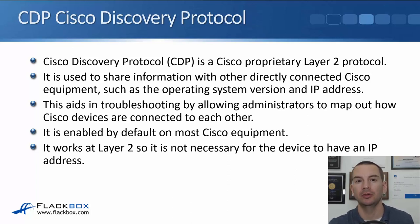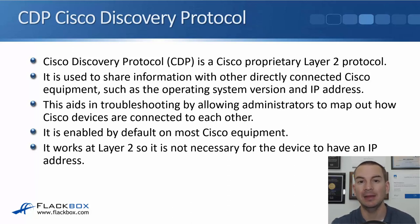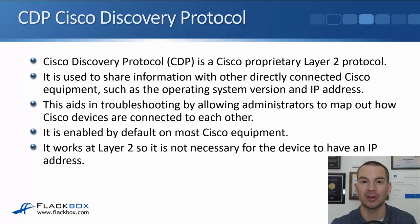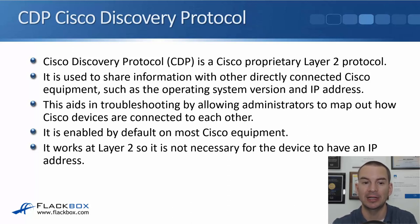For example, say that you're in New York and there is a problem in Sydney and you don't know about the network topology in Sydney. Well, as long as you can jump on one device there, then you could use Show CDP Neighbors to map out how all the other Cisco devices are connected to each other. So it's a very useful troubleshooting tool. Even if you know what the topology should look like, you can use Show CDP Neighbor to check that the device is there and detected at layer 2.